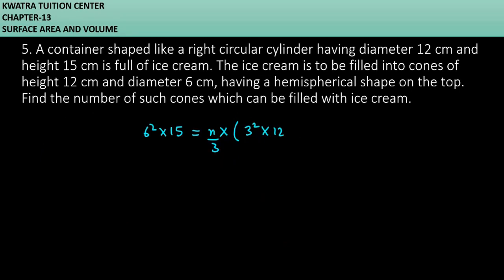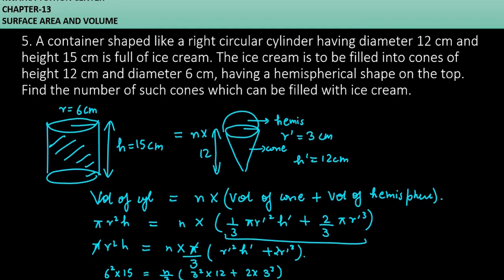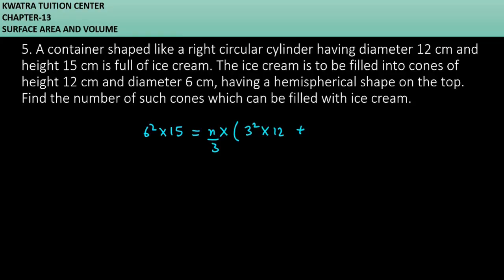3 square into 12 and we had 2 into 3 cube. Now we'll solve the bracket part and use criss-cross method so that you can find the number of cones which can be filled with ice cream.